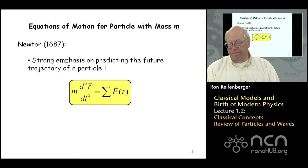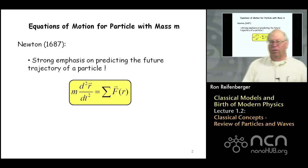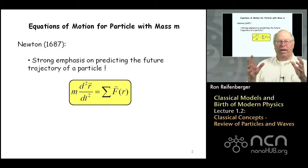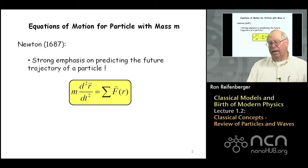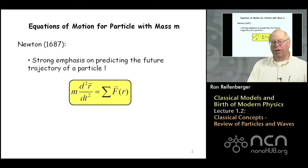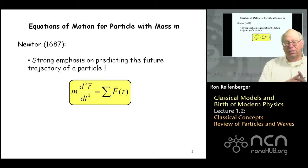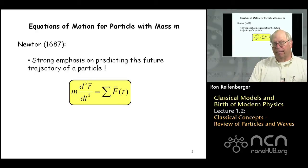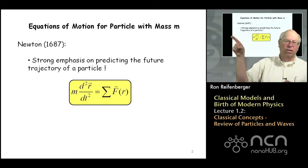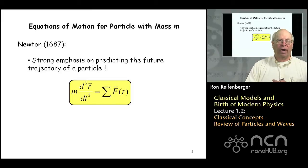Let's begin with equations of motion of a particle. We say a particle has a mass m and we want to know how that particle moves on earth under the influence of gravitation. Newton was the first person able to solve this problem in a completely general way, back in the 1680s. The physics of particle motion places a very strong emphasis on predicting the future by being able to calculate the trajectory that a particle might follow.